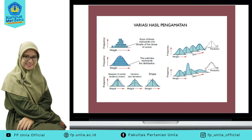Grafik distribusi normal bisa membentuk berbagai macam pola yang berbeda-beda. Ada tiga bentuk pola yang mungkin dihasilkan dari grafik distribusi ini. Yang pertama, dari grafik distribusi normal ada kemungkinan memiliki nilai tengah yang berbeda. Kalian bisa lihat grafik dengan garis tegas dan grafik dengan garis putus-putus. Titik puncak dari grafik distribusi ini merupakan titik rata-ratanya. Grafik distribusi di sini memiliki nilai rata-rata yang berbeda, jadi nilai rata-ratanya bergeser. Ini termasuk perbedaan dari bentuk grafik distribusinya.